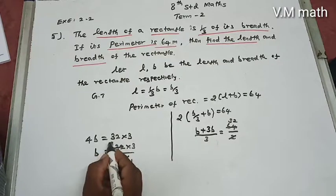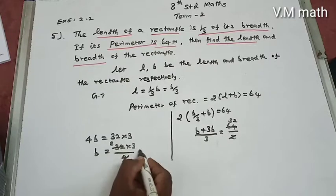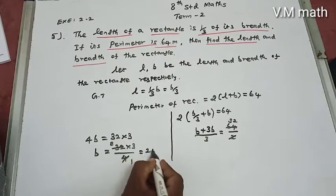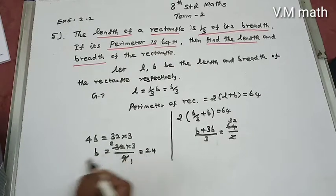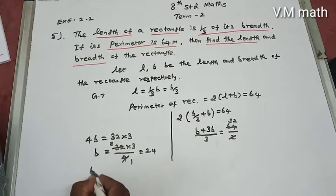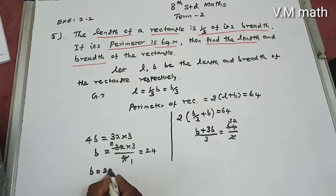Therefore B equals 8 into 3, which gives us 24. So breadth B is equal to 24 meters.